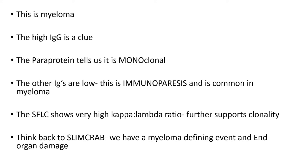If we think back to the SLIM-CRAB criteria from the first lecture, we have a myeloma defining event — the serum free light chain ratio of over 100 — and end organ damage. The HB is low, suggesting the bone marrow has become infiltrated, and the calcium is high, suggesting bone damage.